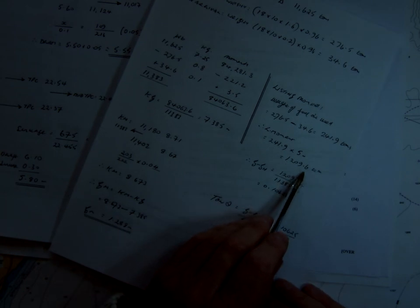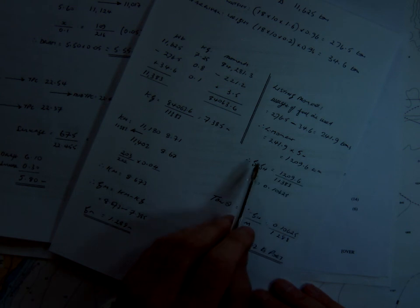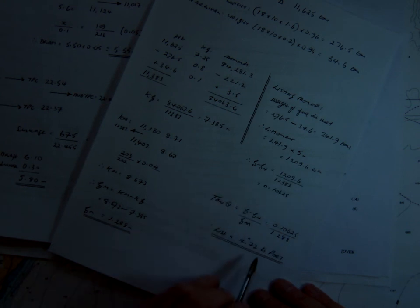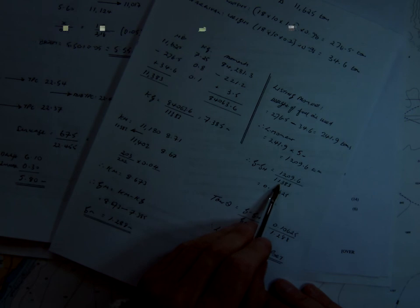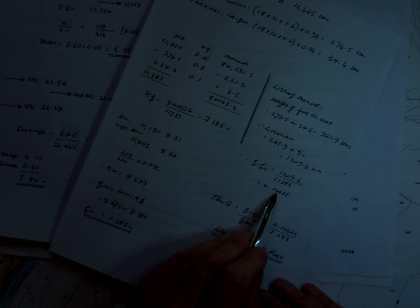Now we've discharged from the starboard side, so it must be a port listing moment. We must be listed to port. Don't make a mistake on this. Make sure that you put your list to port. So GG1 is listing moments over displacement, 0.10625.